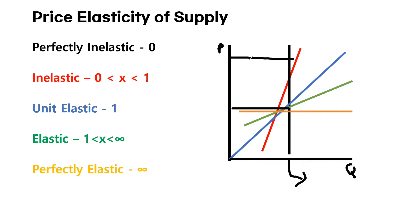You can usually see this in certain theaters or sports stadiums. No matter how much the price changes, it is hard for them to increase the quantity of seats. So in this case, it is likely that the supply will be perfectly unelastic.